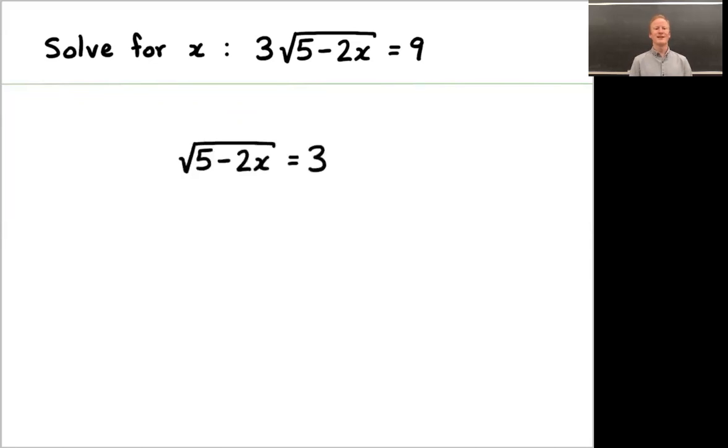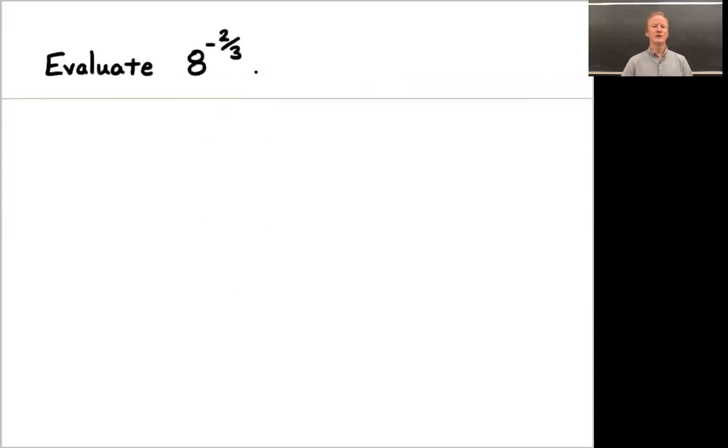Welcome back. We can divide by 3, then we can square, then we could subtract 5. We'll have minus 2x equals 4. Divide by minus 2 tells us that x equals minus 2. x is negative 2 is a solution to this problem. Let's move on to another problem.